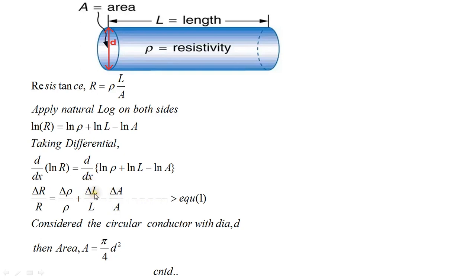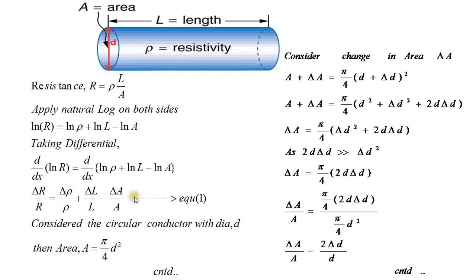We need to find δA in terms of δL. Since we considered a circular conductor with diameter D, area A = (π/4)D². So A + δA = (π/4)(D + δD)², which expands to D² + δD² + 2D·δD. The π/4·D² terms cancel, and since δD² is negligible compared to 2D·δD, we finally get δA/A = 2·δD/D.